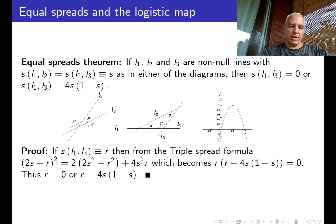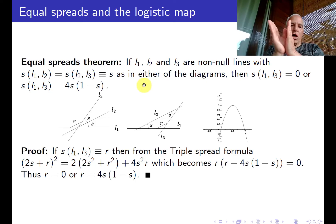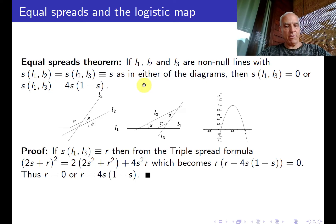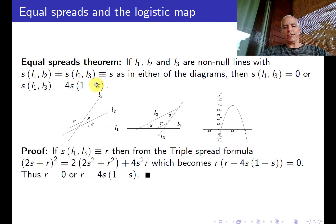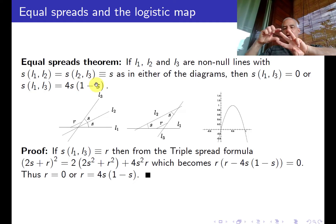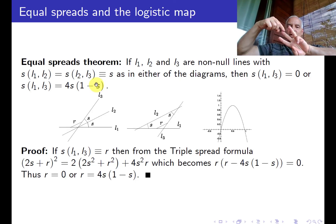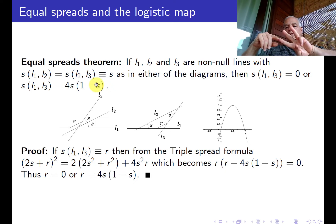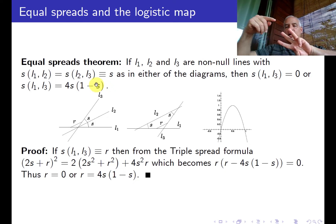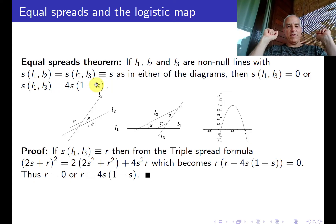A good place to start is with this result which I call the Equal Spreads Theorem, which explains what happens if you have three lines L1, L2, and L3 so that the spread between L1 and L2 equals the spread between L2 and L3. Let's call that common spread S. And we're interested in the spread between the first line and the third line.